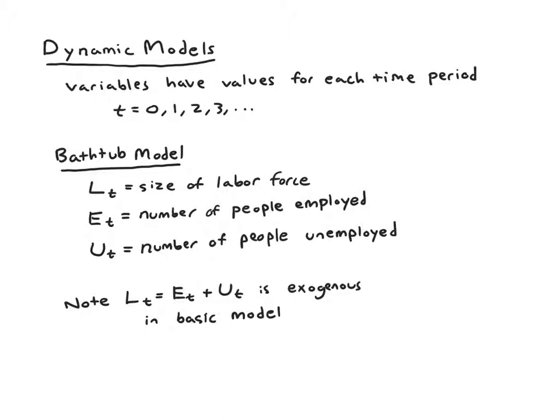The bathtub model has three key variables that all evolve over time periods. There's L subscript t - the t here helping remind us that this variable will take on different values in different time periods. So Lt denotes the size of the labor force, Et denotes the number of people who are employed, and Ut denotes the number of people who are unemployed.